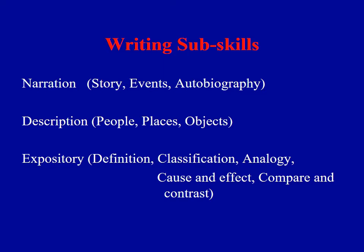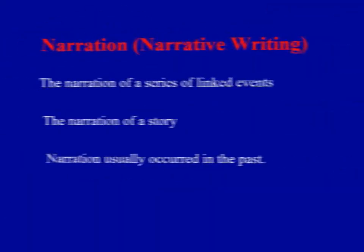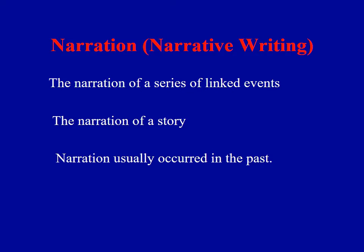Writing sub-skills can be narration or narrative, description or descriptive skills, and expository skills. In narration we have story, events, and autobiography. In description we can describe people, places, and objects. Expository writing is about definition, classification, analogy, cause and effect, compare and contrast, etc. Narration is the narration of a series of linked events or a story. Narration usually occurs in the past, and past events can be accommodated in narrative writing.